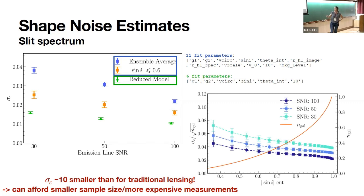Expanding on the realization that performance is better if we restrict to closer-to-face-on galaxies: looking at the fraction of galaxies included as a function of a cut on sin(i), for a randomly oriented population most galaxies will be fairly close to edge-on. Looking at the scaled shape noise — σ_ε normalized by the square root of the number of galaxies — the gains at high inclinations are very slow. So if we are limited by the number of spectra we can take, going wider and leaving out the closer-to-edge-on galaxies is the preferable strategy.